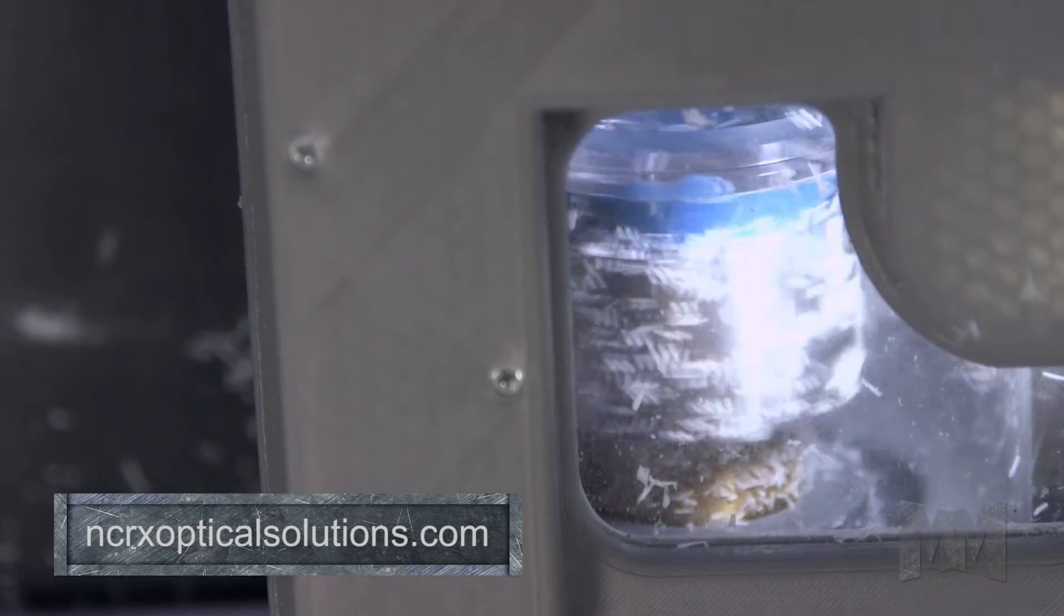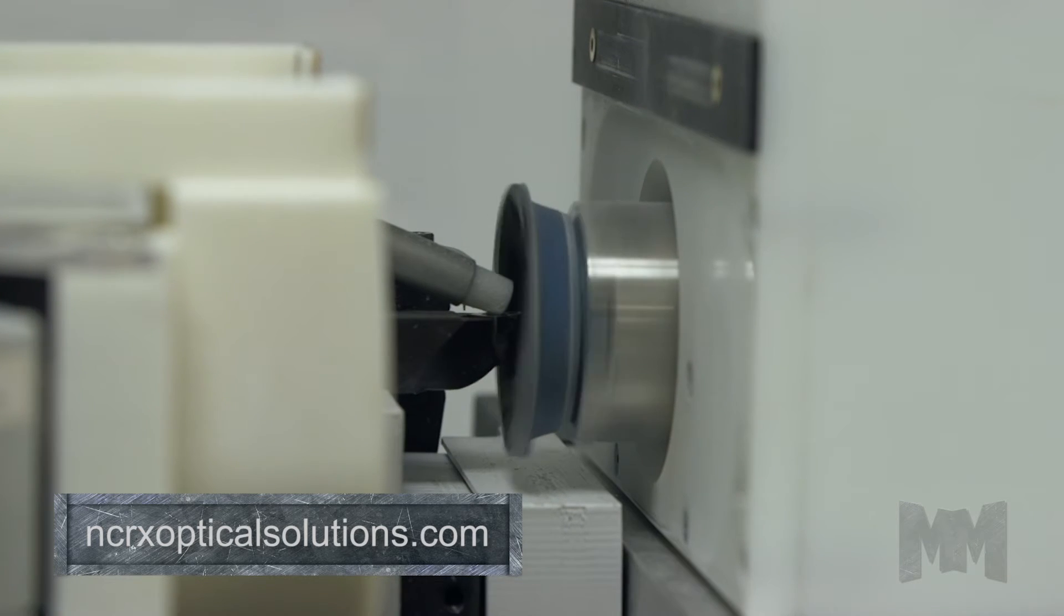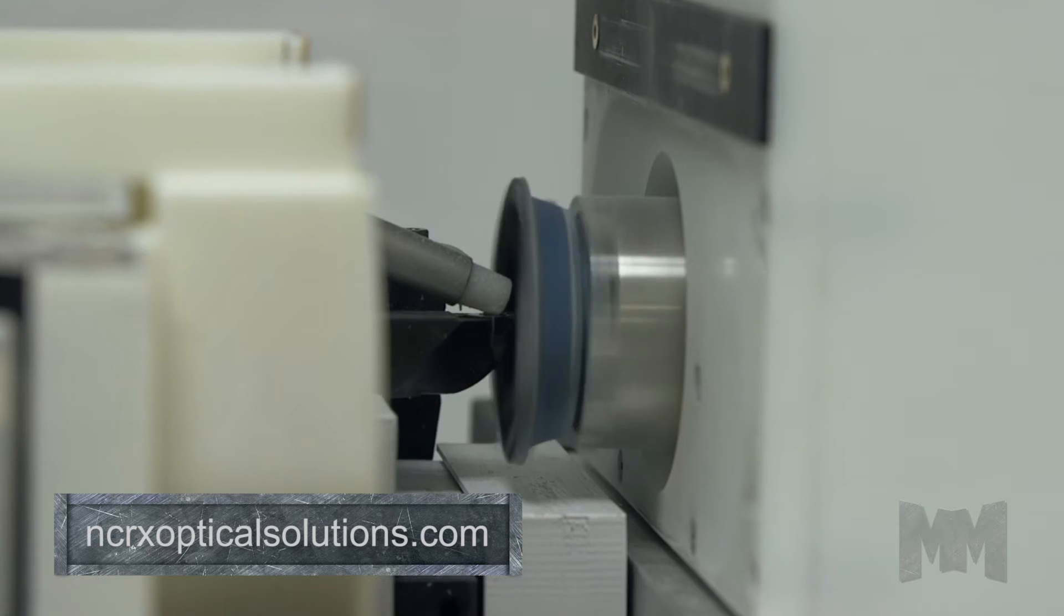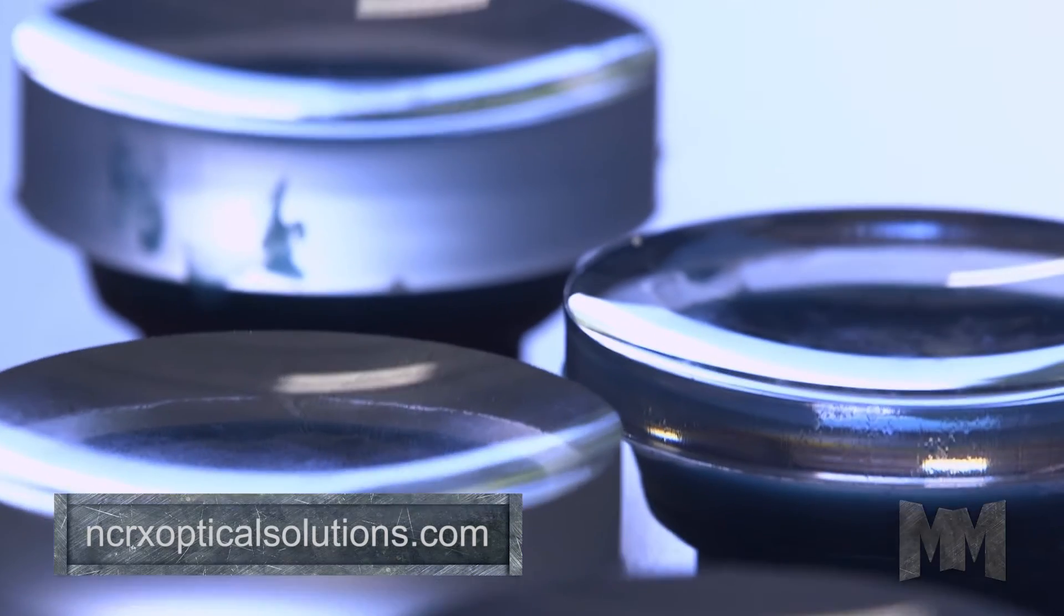Using conventional wax blocking, the NCRX Lab system can produce up to 10 pair of digital progressive lenses per hour. Using alloy blocking, the system can produce even more.